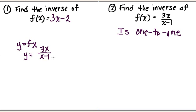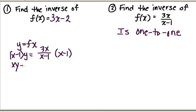My first step is going to be to multiply both sides by x minus 1. So the first thing I'm going to do is multiply both sides by x minus 1. I get xy minus y is equal to 3x.